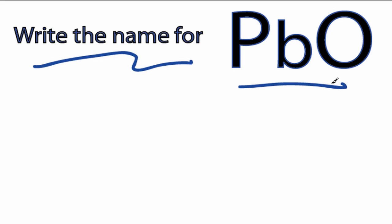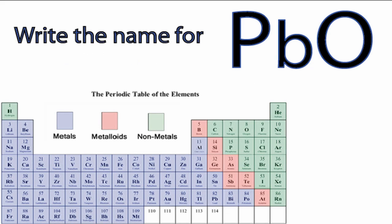So to write the name for PbO, we first have to figure out what type of compound we're working with. Looking at the periodic table, we can see that Pb is a metal, and that oxygen is a nonmetal.